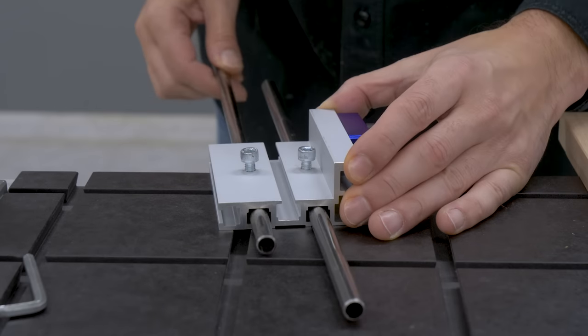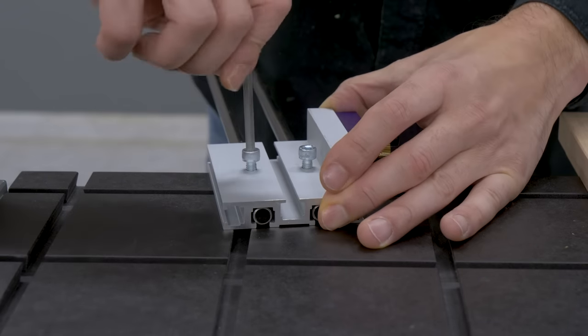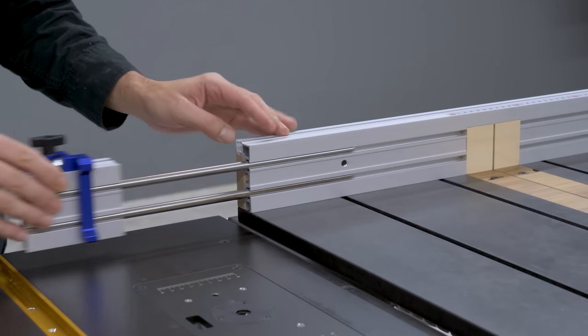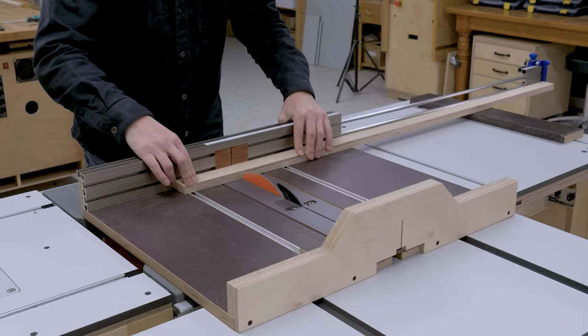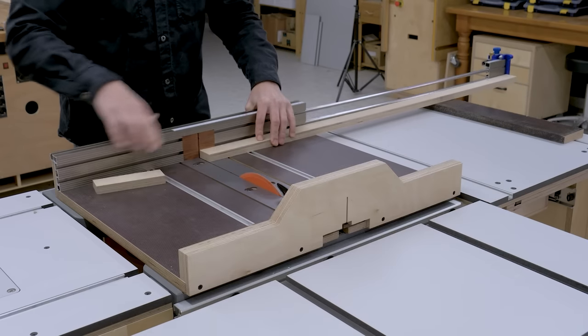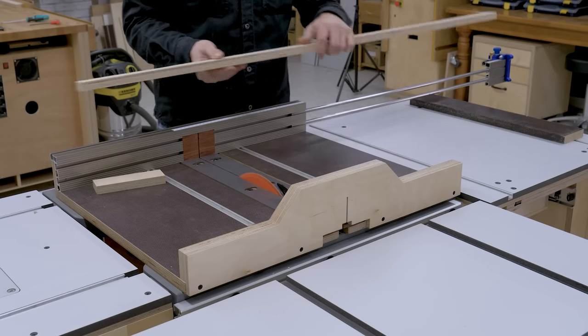By loosening a couple of bolts, I can use this extension on both ends of the sled. You can even make a longer fence extension so that you can cut larger work pieces, like this one I made for my previous crosscut sled.